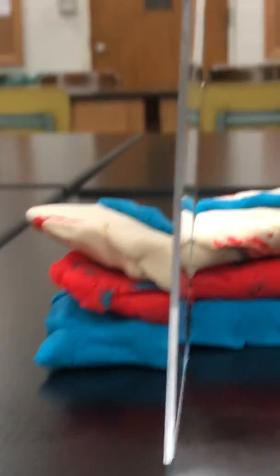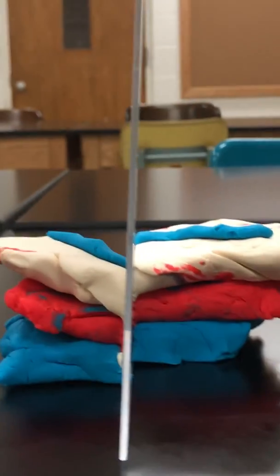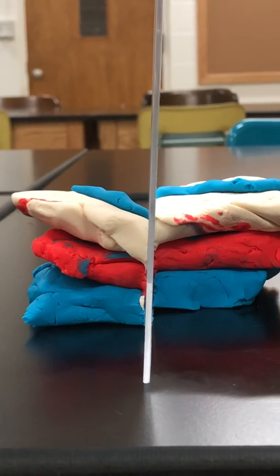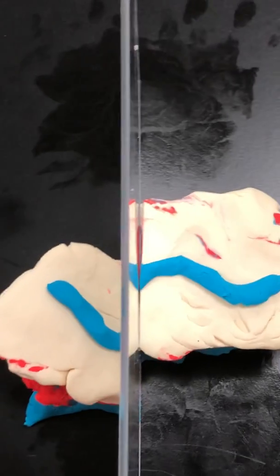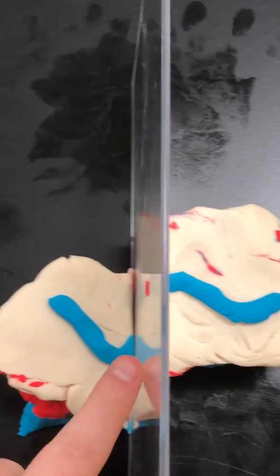Now from this side, if this is our road cut and we're driving along, we may not notice a difference. But let's look at this in map view. In map view, we definitely see that there's been some offset.